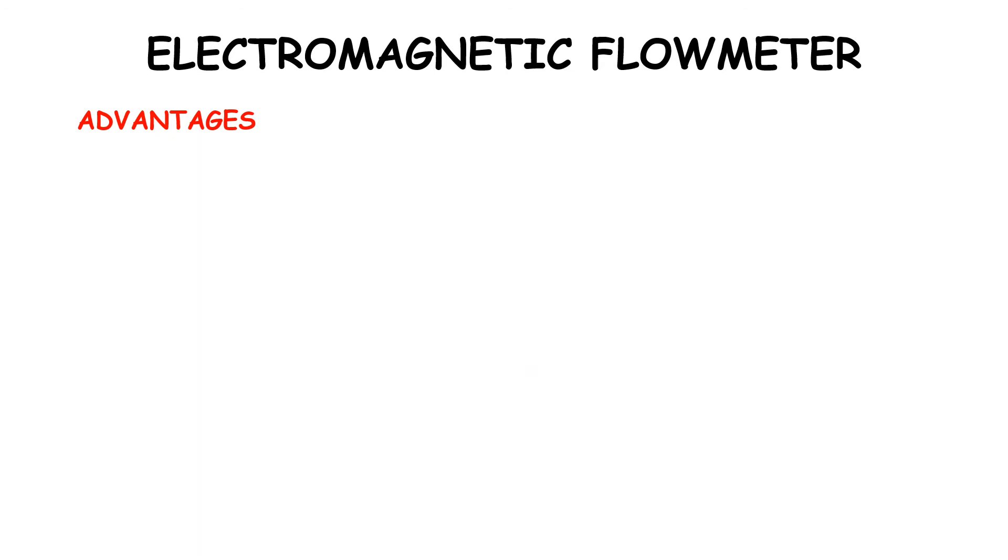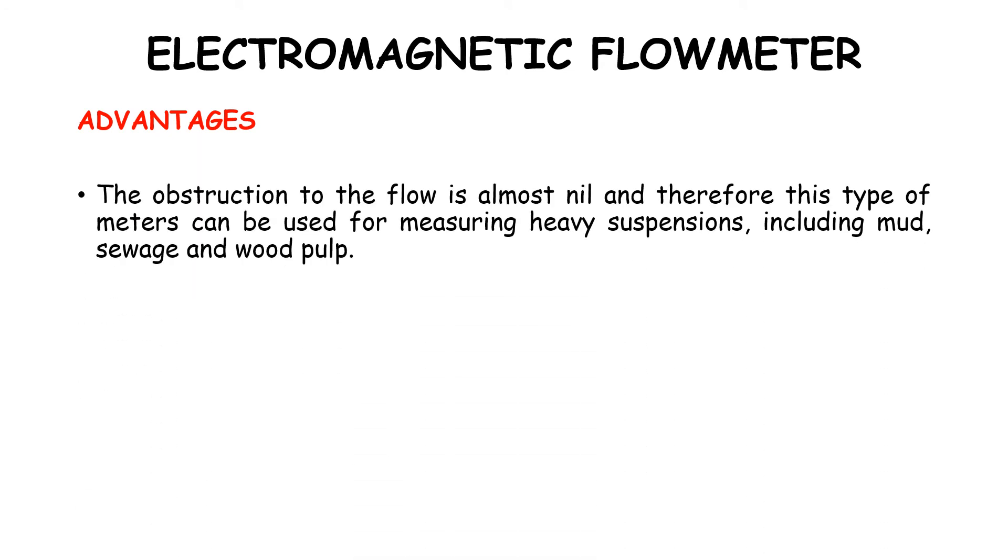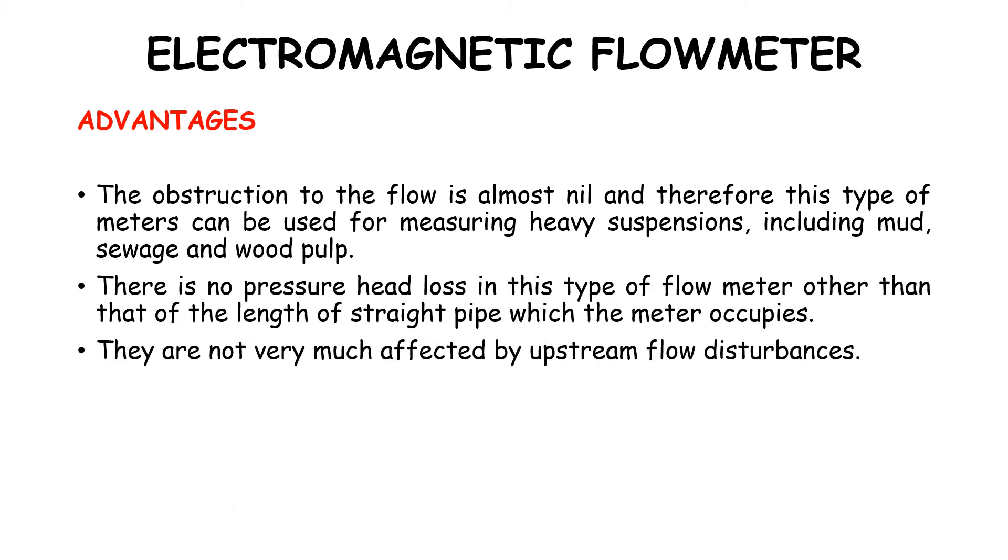Moving on to the advantages: the obstruction to the flow is almost nil, and therefore this type of meter can be used for measuring heavy suspensions including mud, sewage, and wood pulp. There is no pressure head loss in this type of flow meter other than that of the length of a straight pipe in which the meter occupies. They are not very much affected by the upstream flow disturbances.